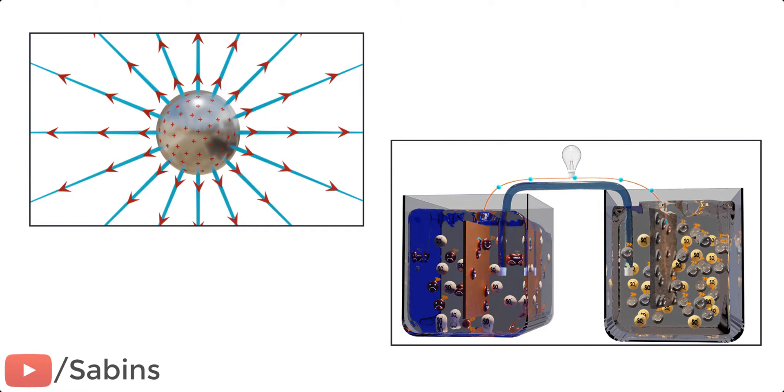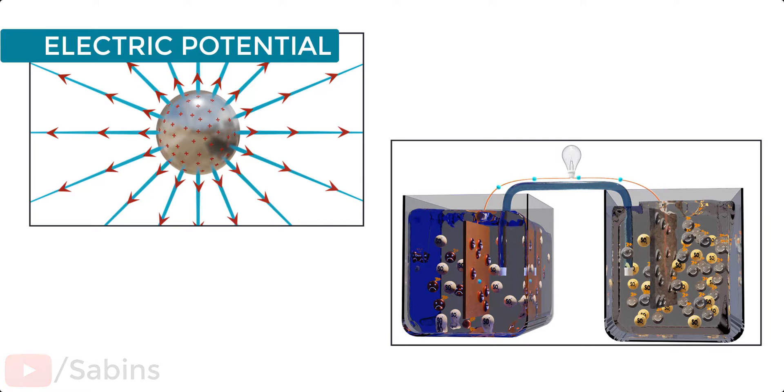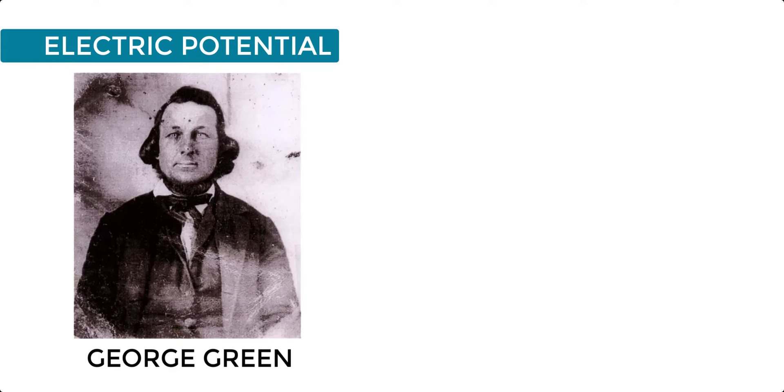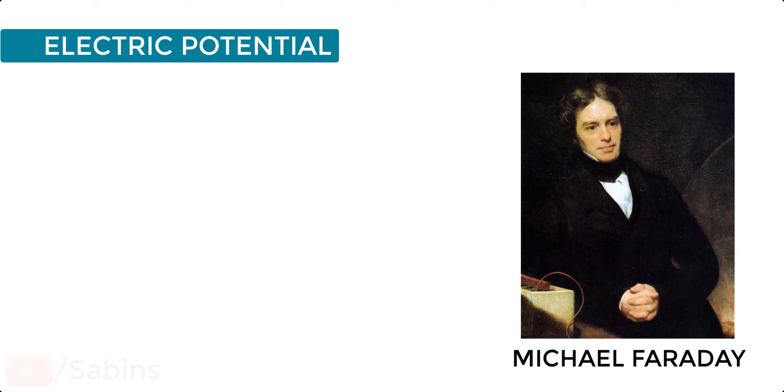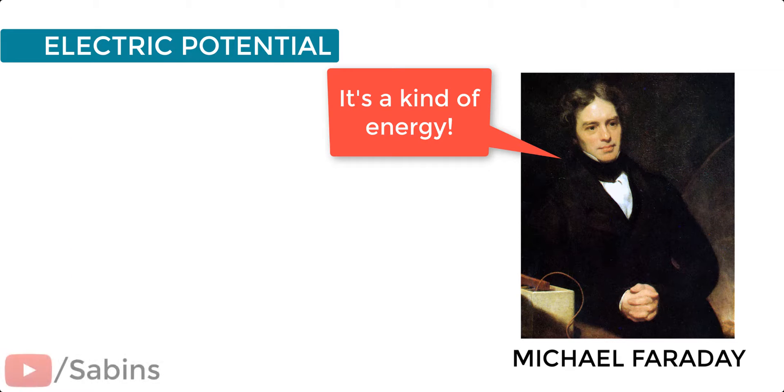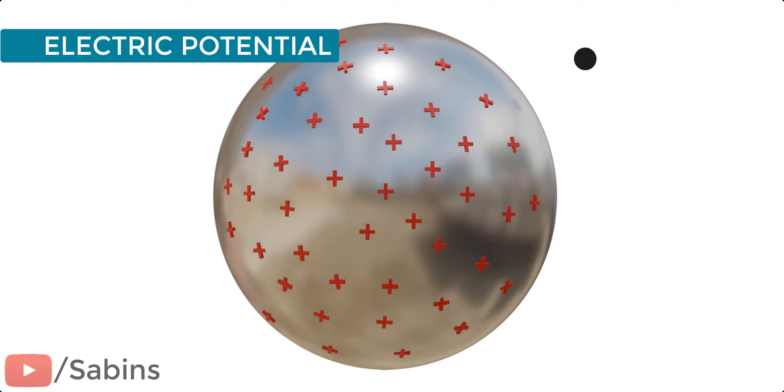To understand the concept of voltage, we have to first understand the concept of electric potential. The term electric potential was coined by George Green. However, Michael Faraday made use of this concept long before Mr. Green named it. Electrical potential is a kind of energy. Let's look at an example to clarify this concept.